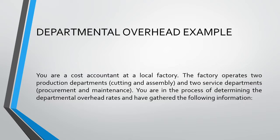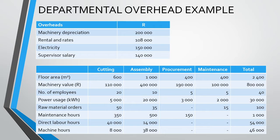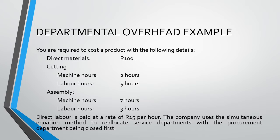Let us have a look at our example to see how this method works in practice. Our factory has two production departments, namely cutting and assembly, and two service departments, namely procurement and maintenance. We are then presented with two tables: the first provides our overhead costs for the factory in total, while the second provides basic information about each department used to allocate the overhead costs. We need to apply the simultaneous equation method for inter-service department reallocations.